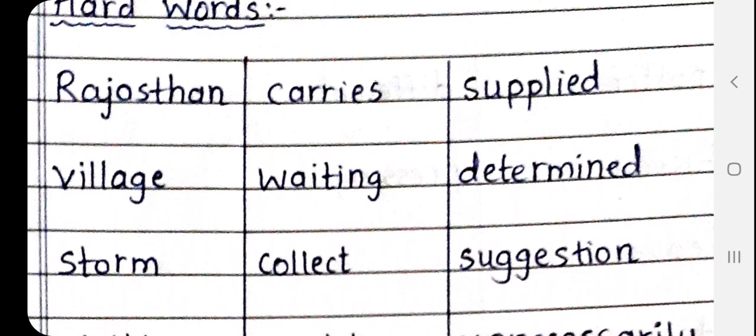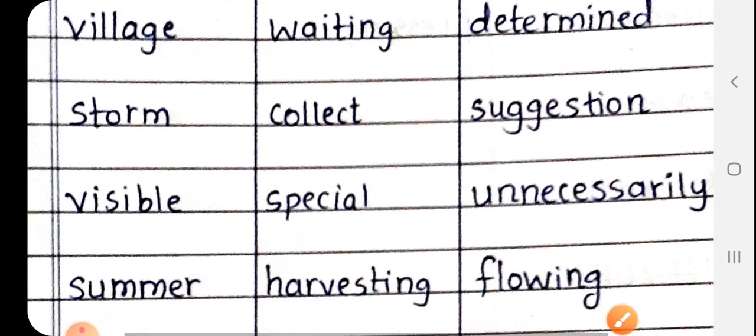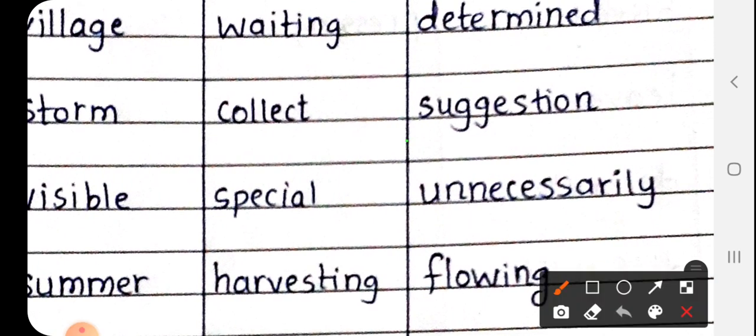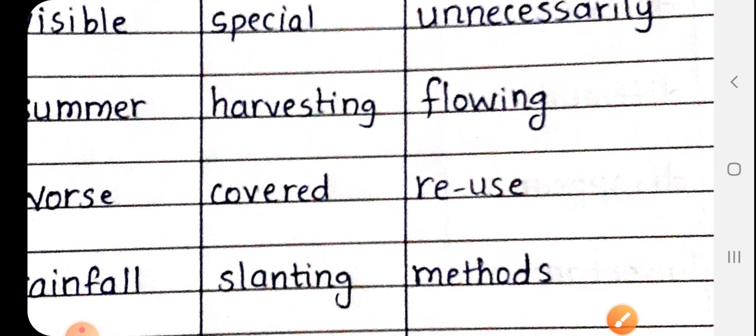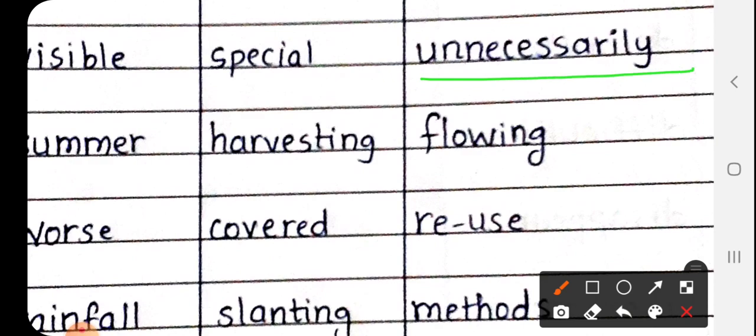Next, supplied. S-U-P-P-L-I-E-D, supplied matlab uplabdh karna. Next is determined. D-E-T-E-R-M-I-N-E-D, determined matlab alag kiya hua, chata hua usay kehte hai. Next is suggestion. S-U-G-G-E-S-T-I-O-N, suggestion matlab sujao. Next is unnecessarily. U-N-N-E-C-E-S-S-A-R-I-L-Y, unnecessarily matlab anavashyak.